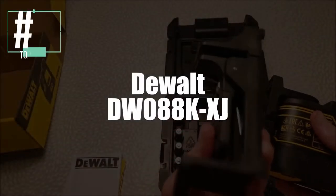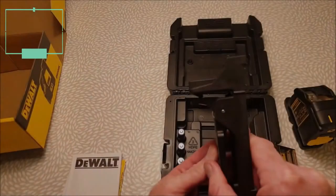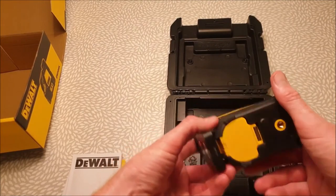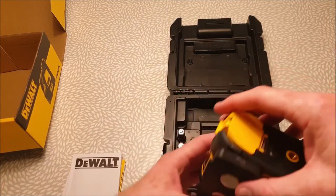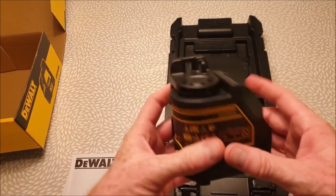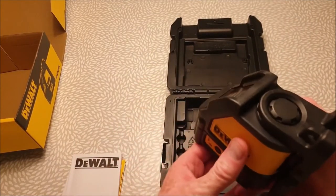Now, in second place, we have the Dewalt Cross Laser Level Model DW088K-XJ. As usual, Dewalt offers us here a device at a reduced price, but with the capabilities of a much larger one. This is, for example, the case of its precision, which is approximately 0.3 millimeters per meter, its automatic focusing up to four degrees of inclination, and its control switches.